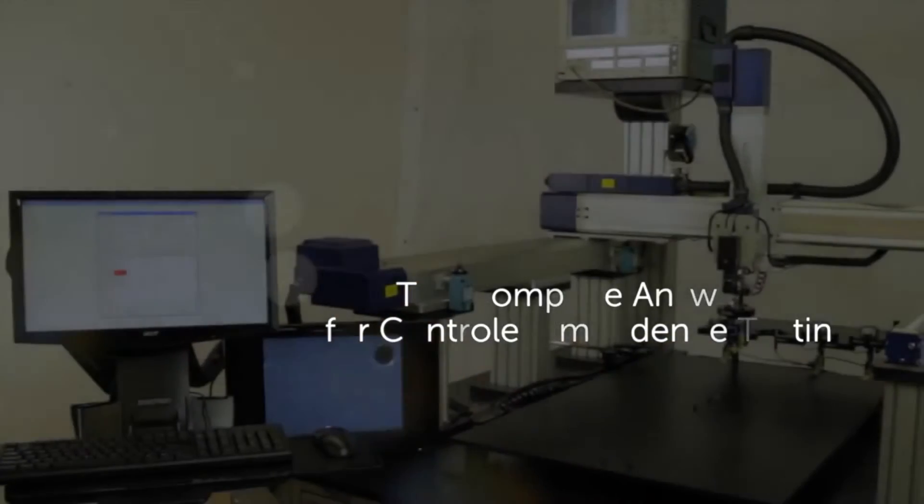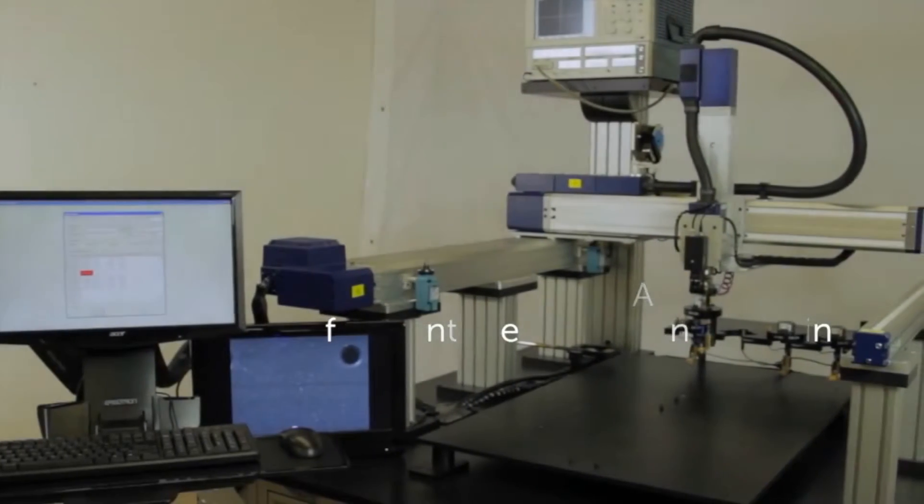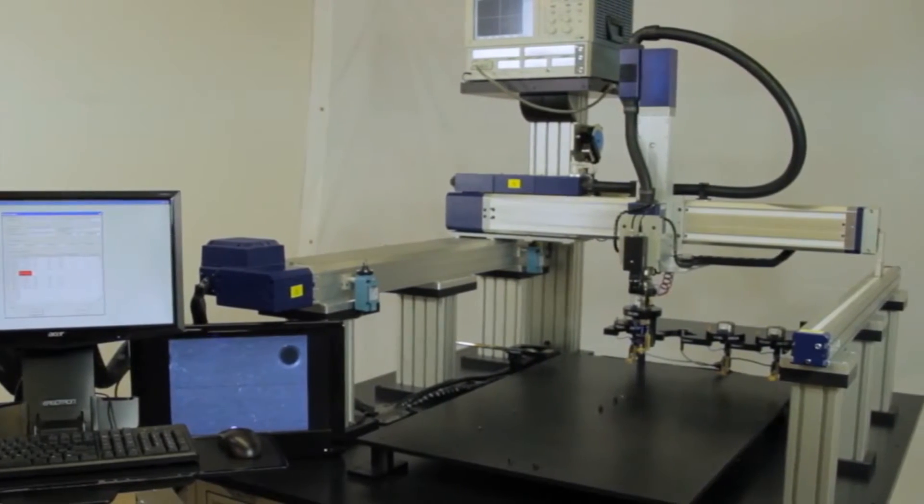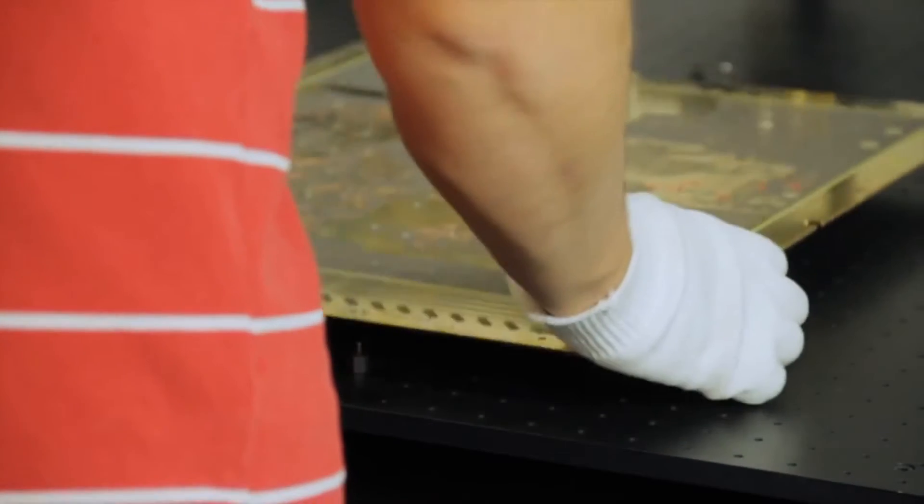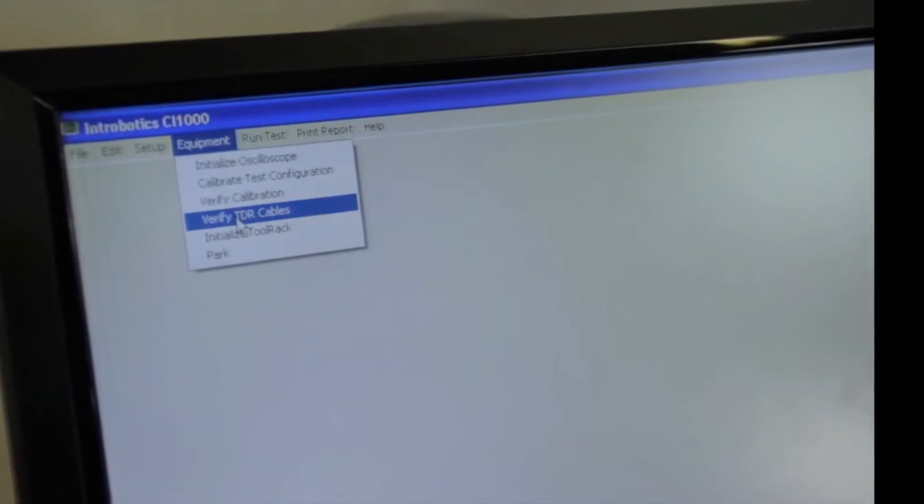The CI-1000 is an easy to learn and simple to operate robotic-controlled system which includes single source software and hardware, providing reliable TDR testing for manufacturing, developers, and laboratory work.